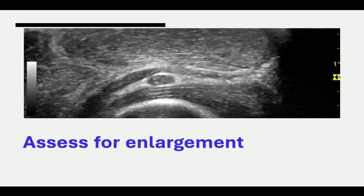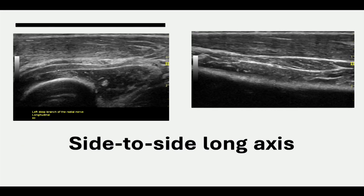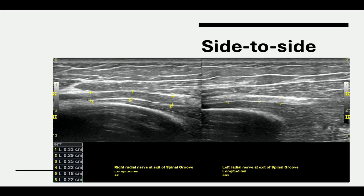When identifying areas of enlargement, sometimes we can't always tell. If we're looking at a nerve window we're not as familiar with, that's when we should incorporate side-to-side comparisons. Here's a side comparison of the deep branch of the radial nerve in long axis — if you were not familiar with its relative size, you can do a similar window on the opposite side and determine that this is significantly enlarged. Another example where the difference is a little more subtle, but you can distinguish that this radial nerve is enlarged compared to the one on the opposite side over a diffuse area.